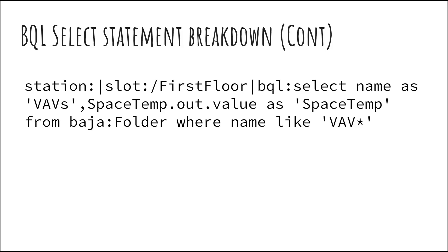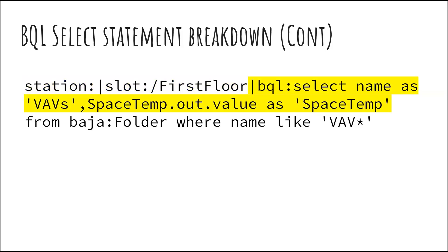I wanted to search from only folders instead of control points where the name was like VAV. Let's look at how this statement is broken down. The first part — station:slot first floor — is the base ORD being applied. The query is not going to return any components that are not children of the base ORD. Every BQL query starts with a base ORD followed by the BQL select. The following text defines what data we want to receive — in our case, name and space temp.out.value — used as our columns, resolved and populated by each result when we run our query.